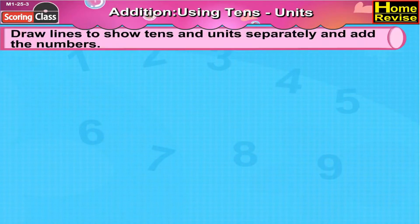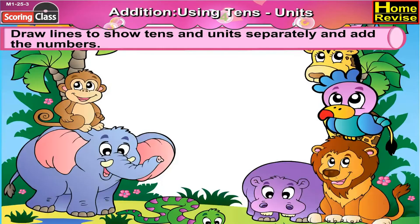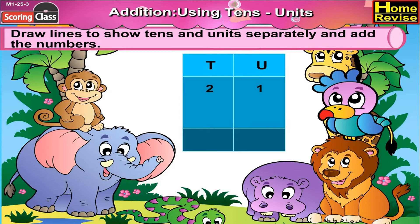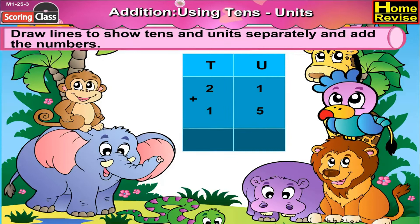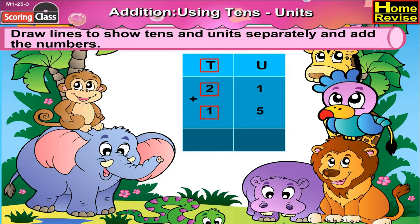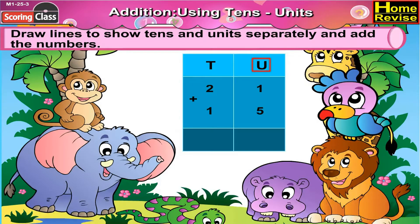Draw lines to show tenths and units separately and add the numbers. First is 21 plus 15. Let us draw a line between 21 and 15. Above 15 write units, above 21 write tenths. Now let us begin our addition from the units column.